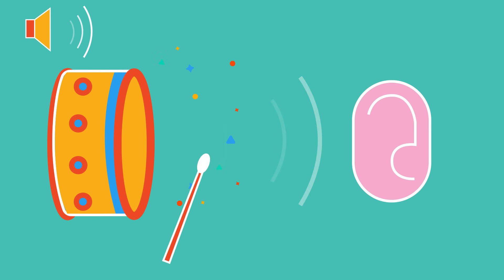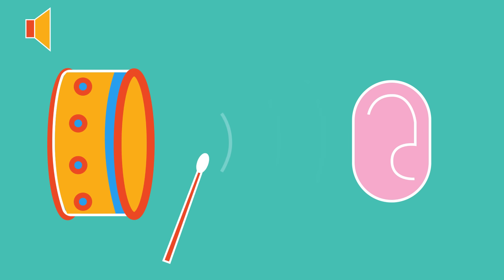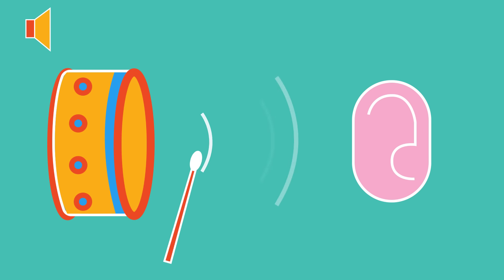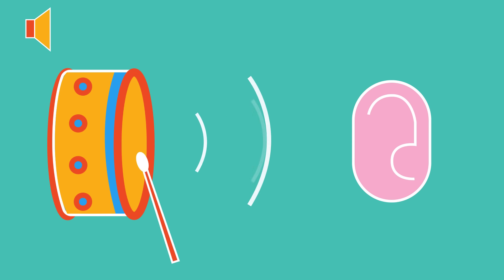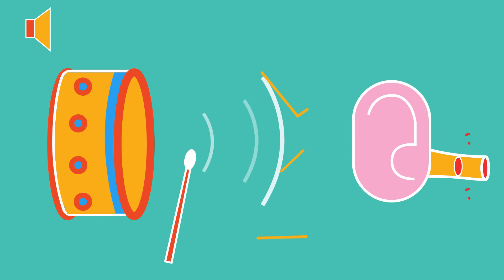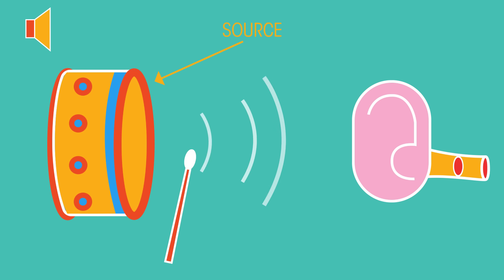An example of longitudinal waves is sound. When a drum is struck, the drum skin vibrates, which causes the air particles next to it to vibrate. This causes the next air particle to vibrate, then the next, and so on until the vibration reaches the ear causing the eardrum to vibrate. The vibrating air speeds away from the source, creating a sound wave.